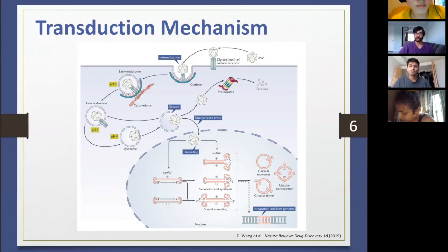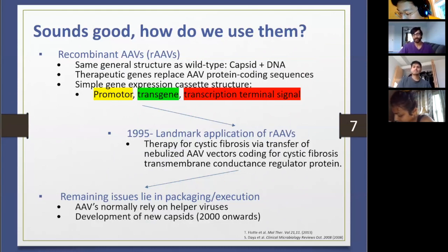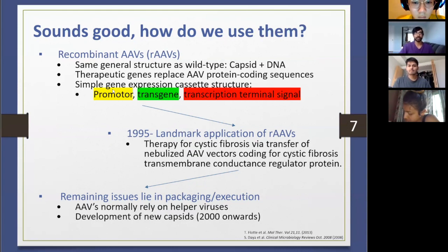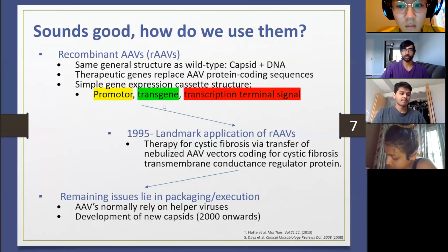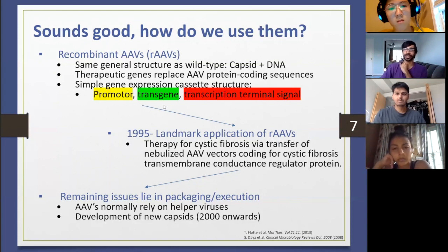So what do we actually need to do to use these therapeutically? We need to make recombinant AAVs. Wild-type AAVs aren't doing much on their own, but if we can introduce a good transgene, we can achieve therapeutic benefit. The main change is replacing the protein-coding sequences with something therapeutic — the basic viral expression structure is maintained. This simplicity — maintaining only the basic requirements of a virus — is part of what makes AAV so adaptable.